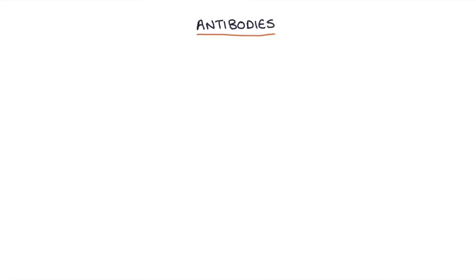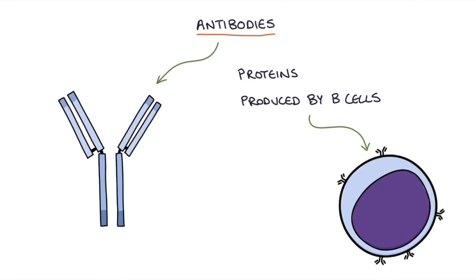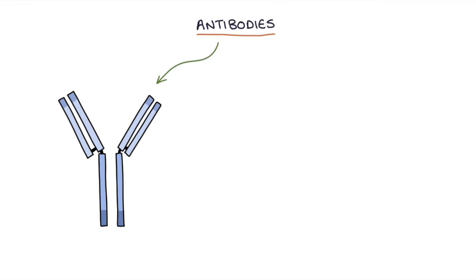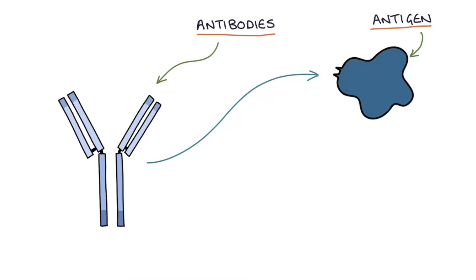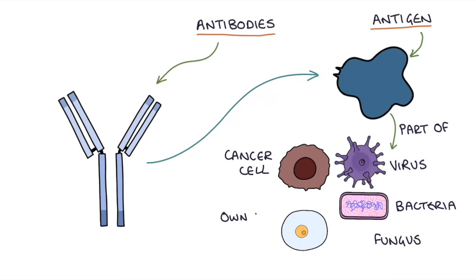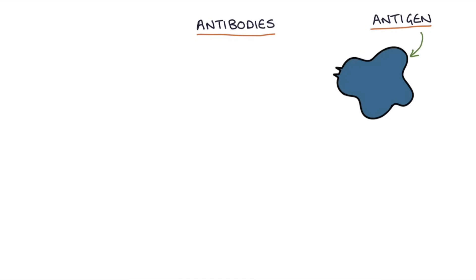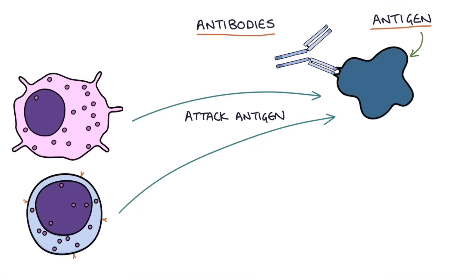Firstly, it's essential to have a very basic understanding about antibodies, otherwise you'll find it extremely hard to understand hepatitis B serology. Antibodies are basically proteins that are produced by B cells. There are millions of types of antibodies and each B cell only produces a single type, and that single type of antibody only targets a single type of protein. The protein targeted by an antibody is called an antigen.